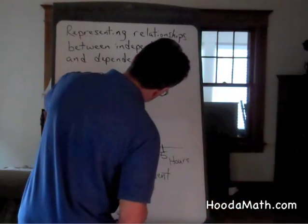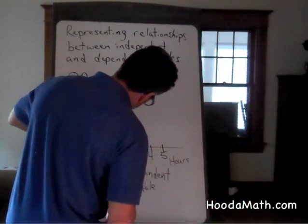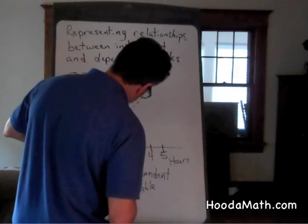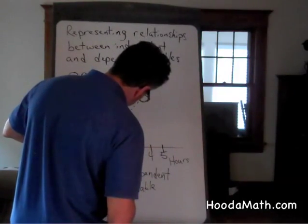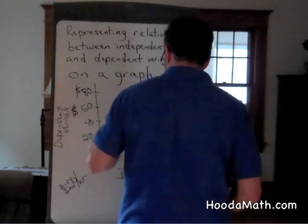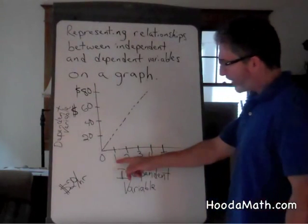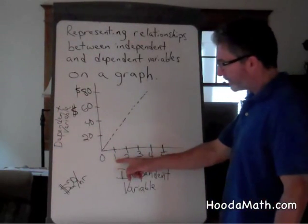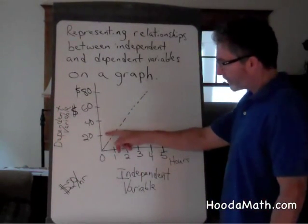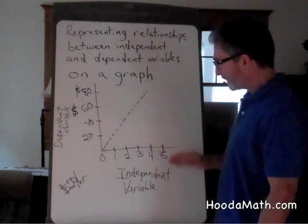If you graph this, you will know the relationship is a straight line or direct relationship. One hour goes with $20, two with $40.